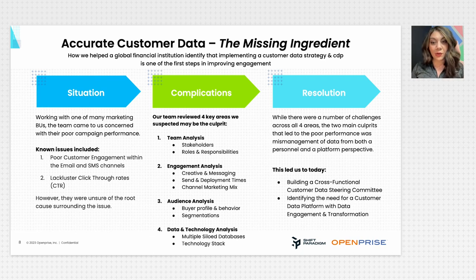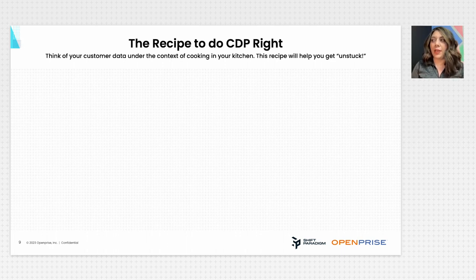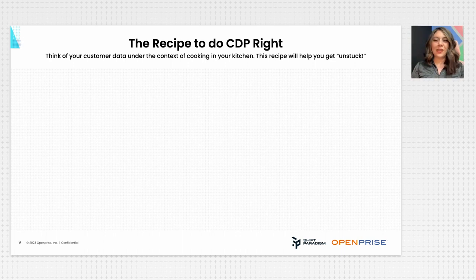The two missing ingredients we identified were: making sure there was a great data steering committee, and making sure there was great data powered by the right technology and the right data strategy. So let's talk about our recipe at Shift Paradigm and what we do to help organizations really do CDP right.